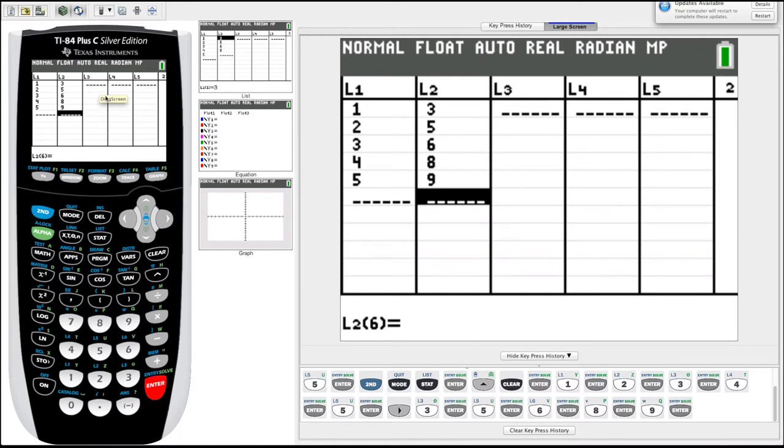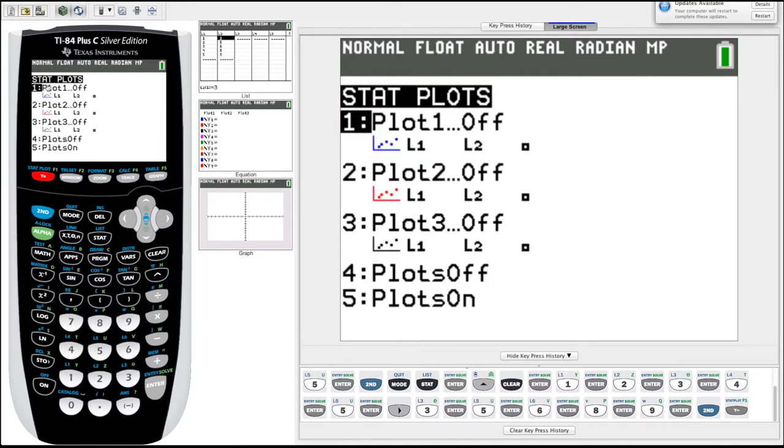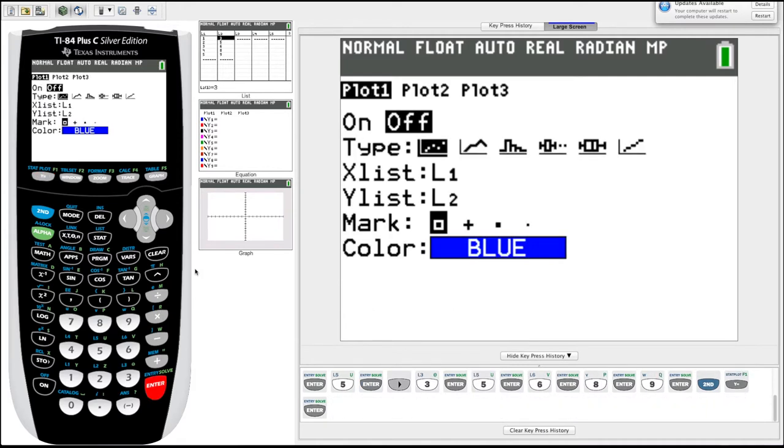The next thing we're going to want to do is after we have some data, we're going to want to make maybe a scatter plot of it. So we hit our second key, go up to y equals, notice that when you hit second, it should go to stat plot. So stat plot, we'll pick plot one, hit enter. We've got a few options here. First thing and most important thing is make sure you click the little on there because it's currently set to off. So now we turned our plot on.